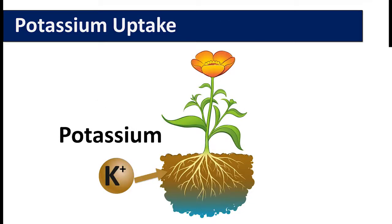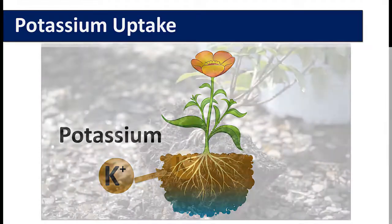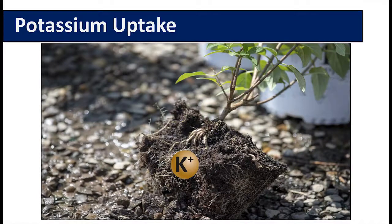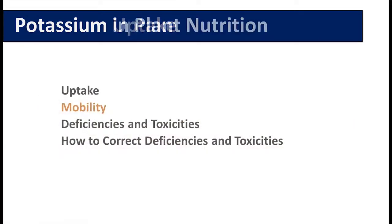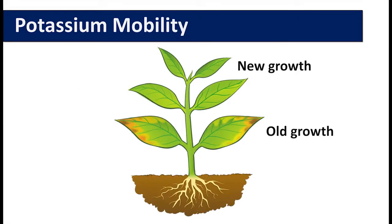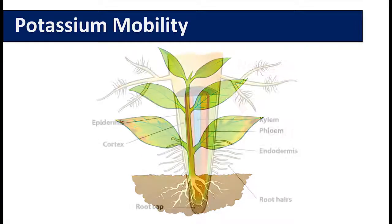Potassium uptake is a passive process. It is a positively charged ion, which can be easily taken up into the plant. Once potassium is taken up into the plant, it is mobile. If potassium is not available in the root zone or there is inadequate root growth, potassium can be remobilized from the oldest leaves and relocated up into the newest growth.